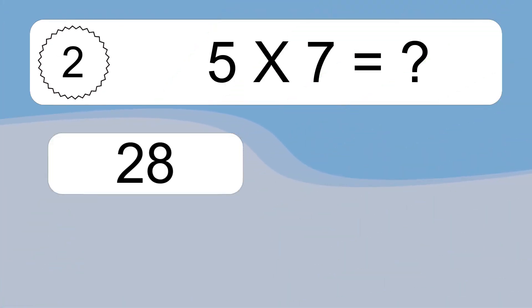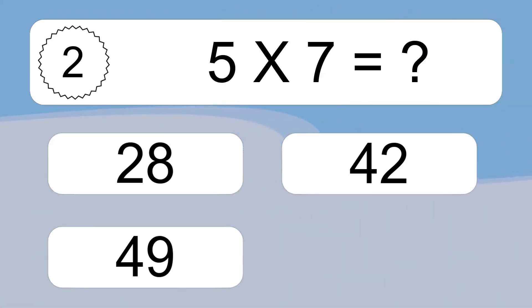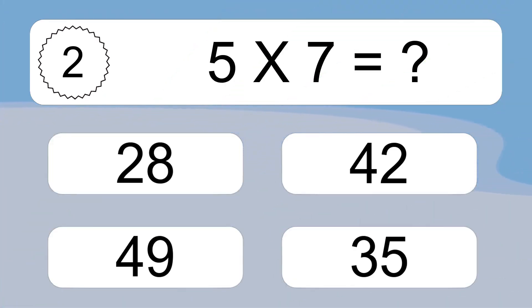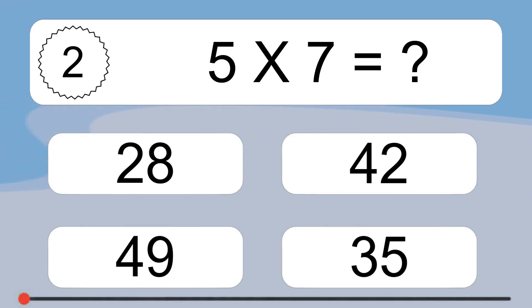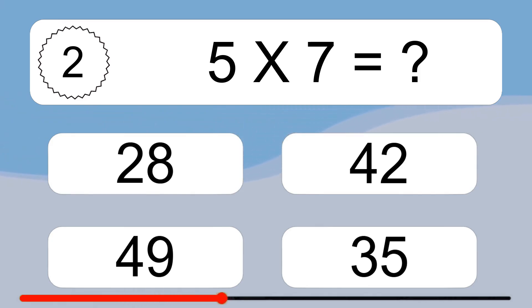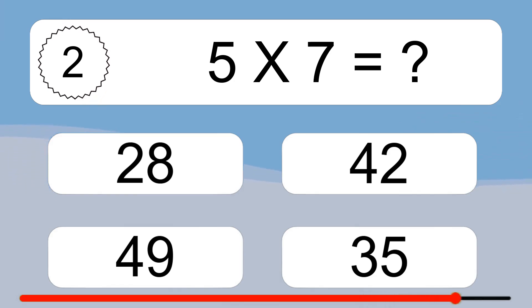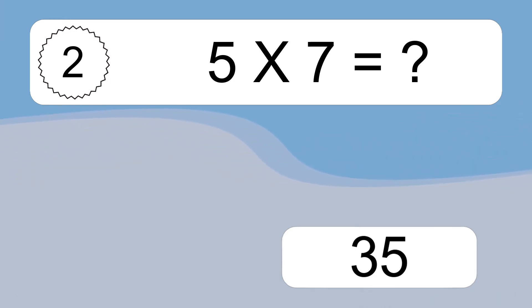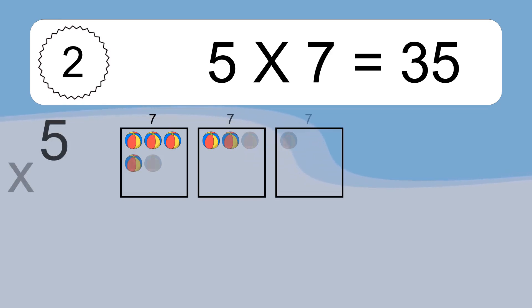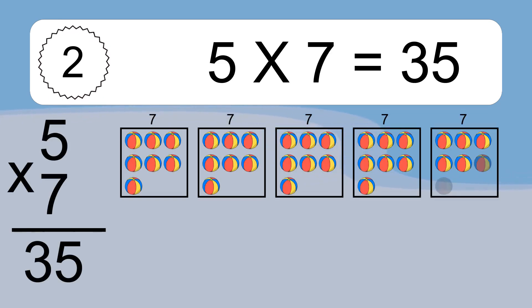5 times 7 equals what? 5 times 7 equals 35.